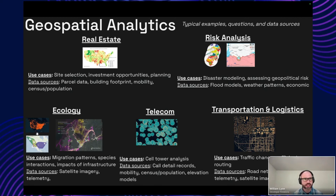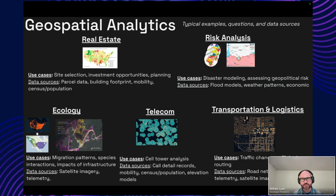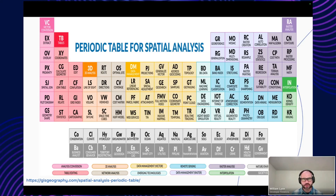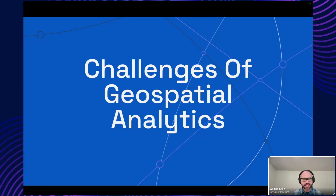Elevation models are also important for line-of-sight for things like microwave signals. In transportation and logistics, things like traffic, efficient routing using road network data, telemetry, and satellite imagery. Really, when we're talking about geospatial analytics, we're talking about making sense of data that has some spatial component. This blog post — the Periodic Table of Spatial Analysis — gives a broad overview of the functionality involved in spatial analytics. Check it out if you want to see some of the techniques involved.